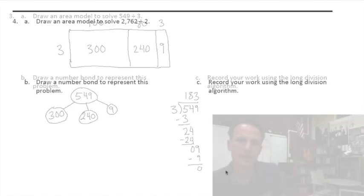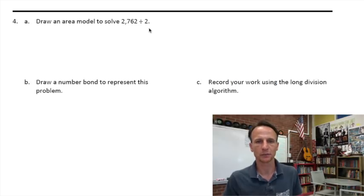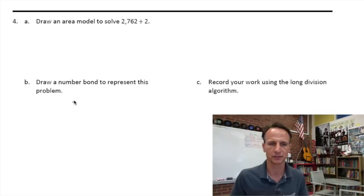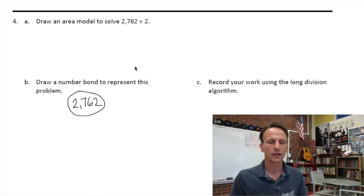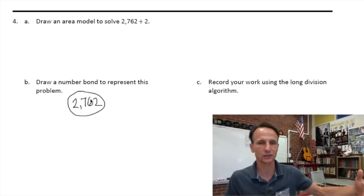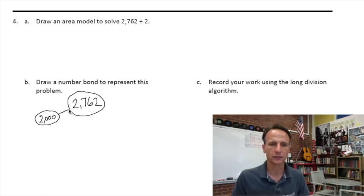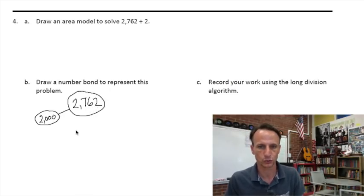We're mopping up with number four: draw an area model to solve 2762 divided by two. Let's do the number bond first — that'll make it easier to see what we're doing. We're starting with 2762 and dividing by two. Back to my donut thing: what's the fastest way to hand out donuts? I can give each person a thousand donuts — two thousand donuts done! So 2000 is one of my partitions. That leaves 762. Now thinking about 700 — it's odd, so dividing by two won't work well — let's work with 600 instead.